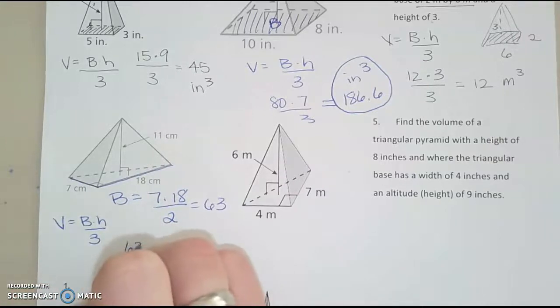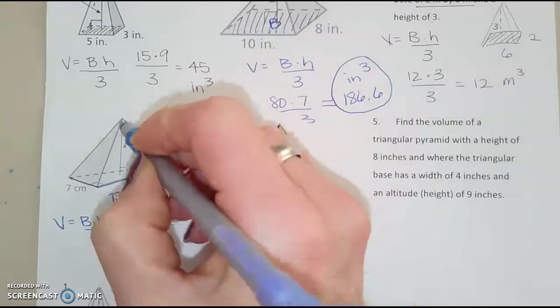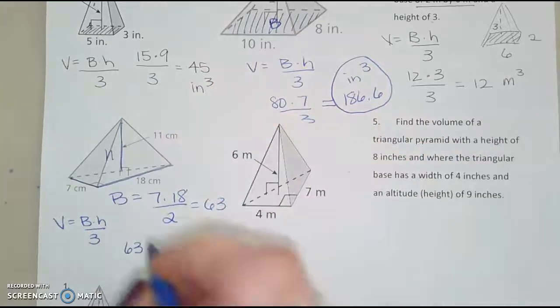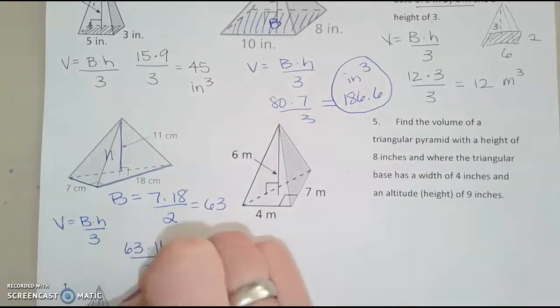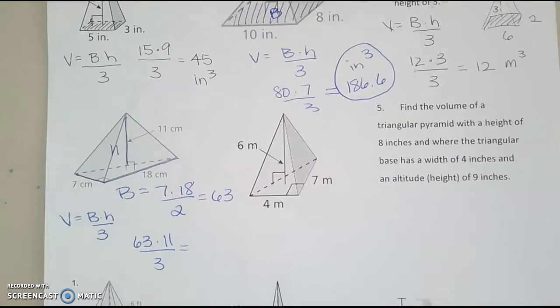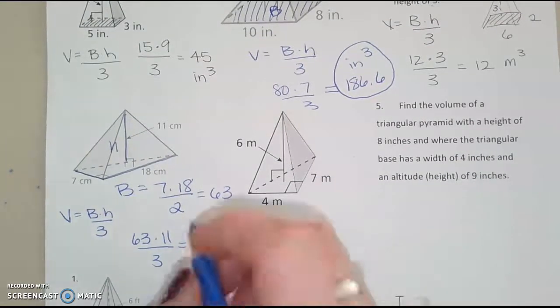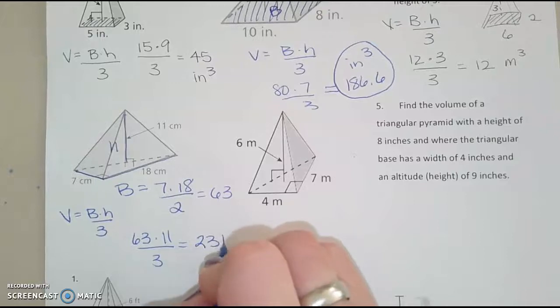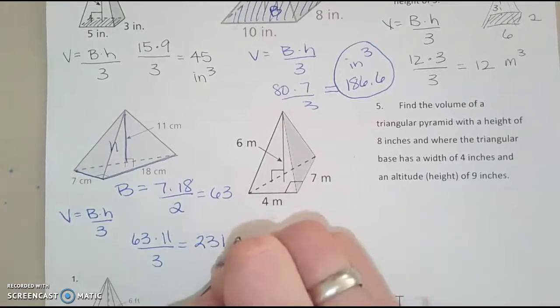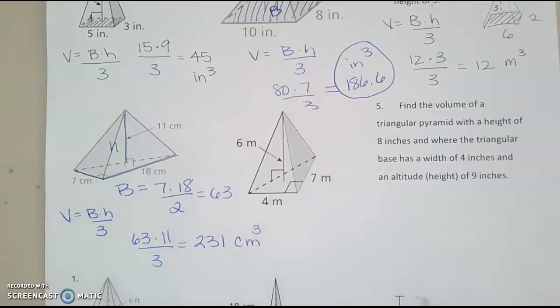Would give me 63 times a height here, height of 11, divided by 3. And when I type that in, I get 231, and it looks like centimeters cubed.